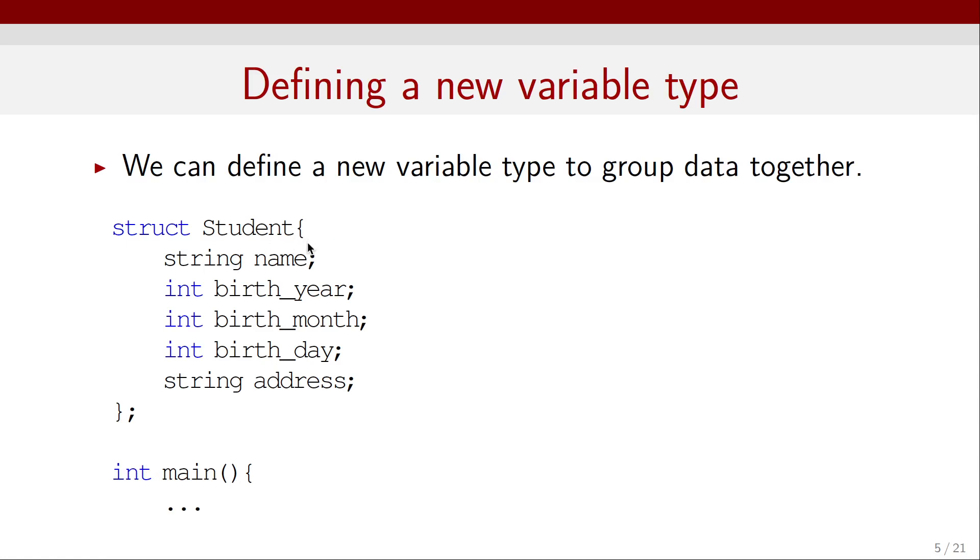And inside that struct, we have a string that we call name, an integer that's the birth year, and so on. The variables I just mentioned before. And we do that before our main function.